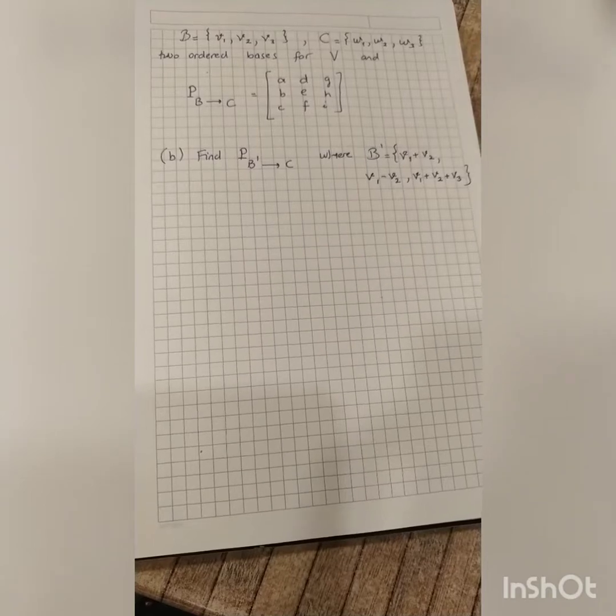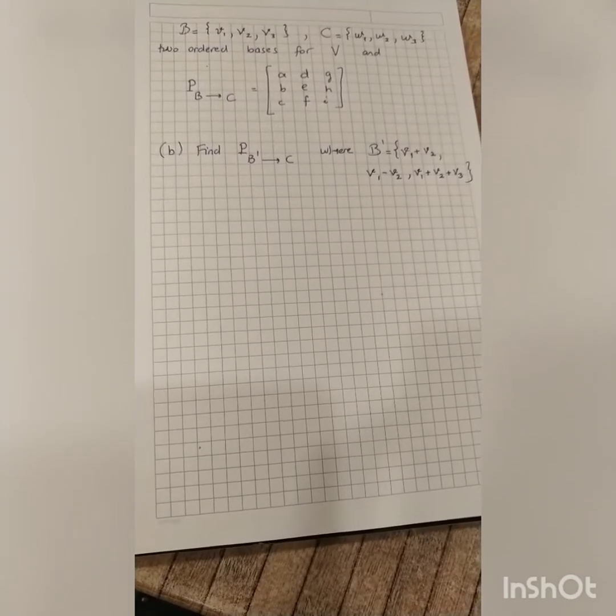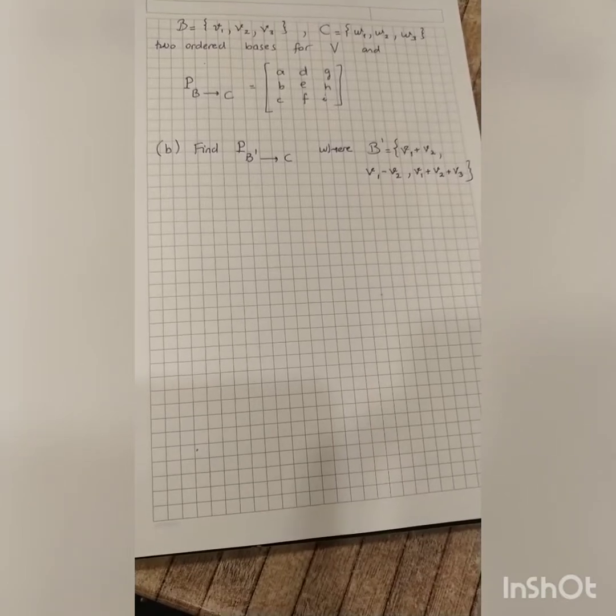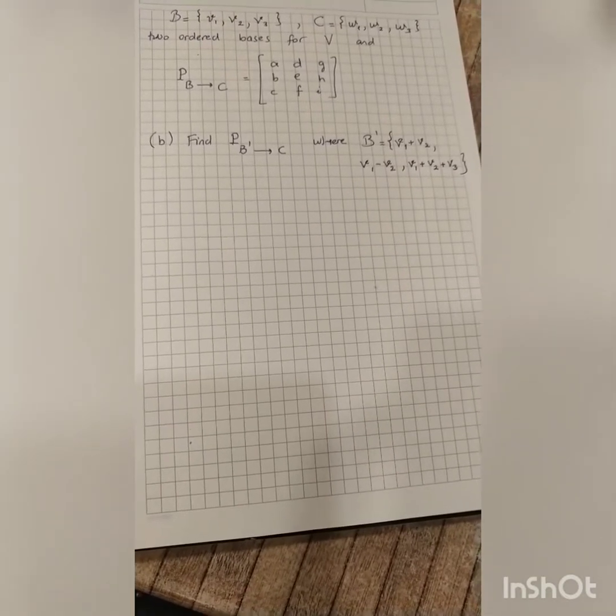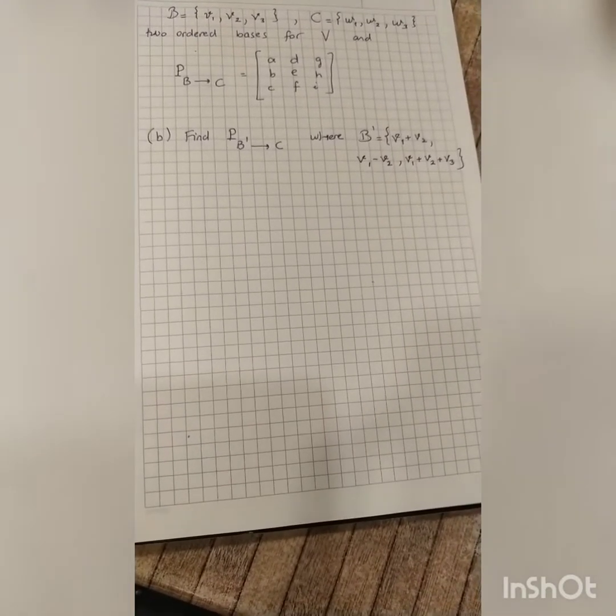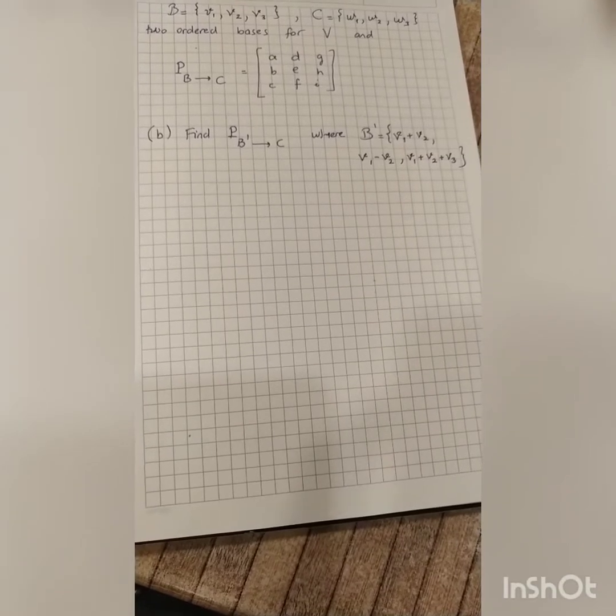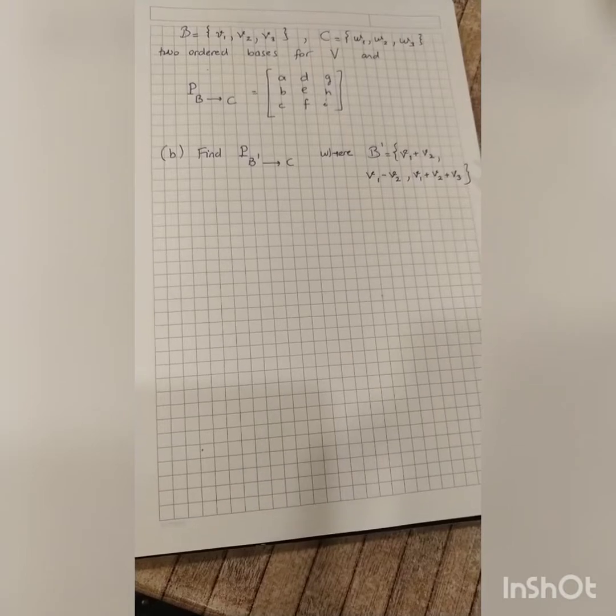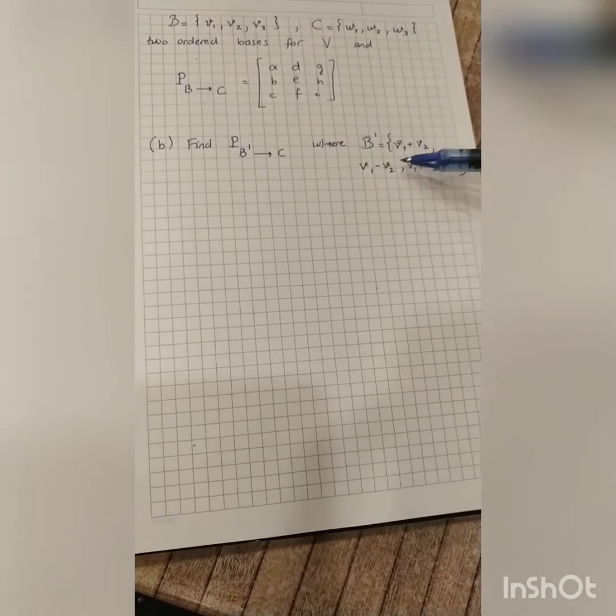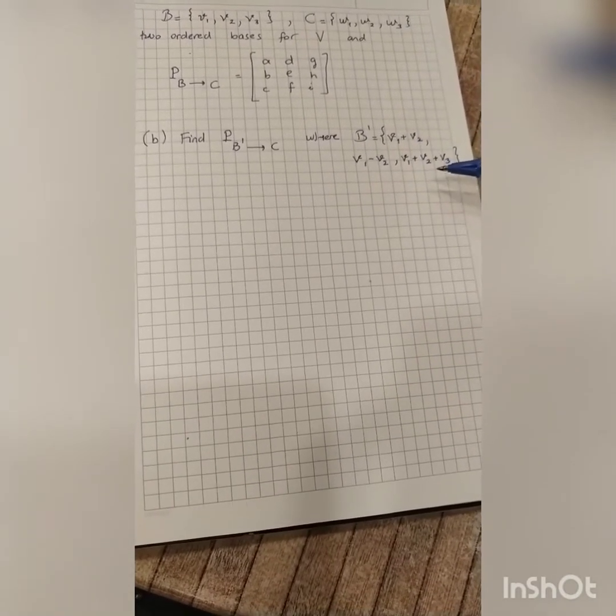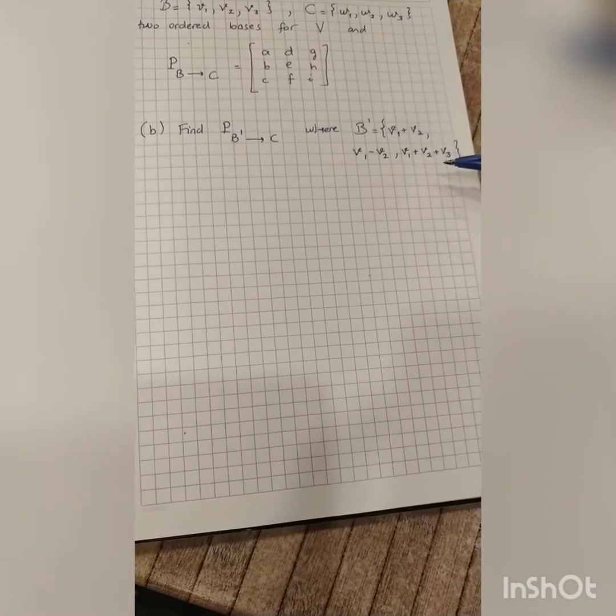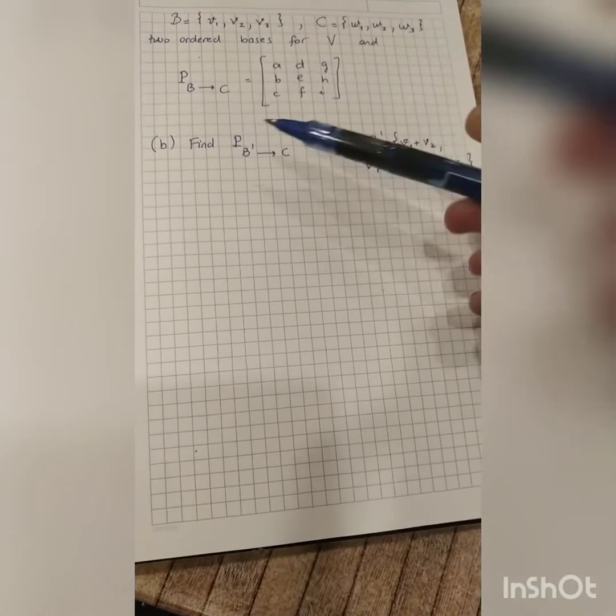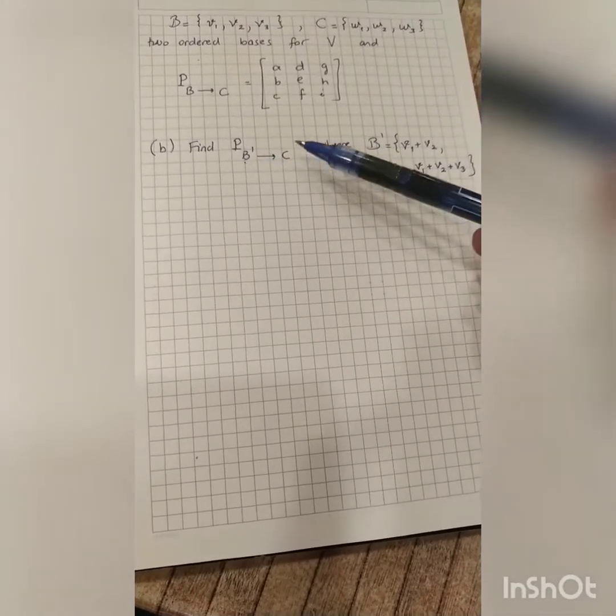Part A just asks for a vector, so I'm not going into that. Part B asks find the transition matrix from B' to C, and we are given a set B' which still is a basis. It being a basis is given by the problem to us, so we don't need to check that these vectors are being independent or they span the whole vector space. So I just need to find the transition matrix from B' to C.